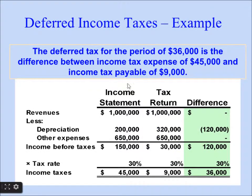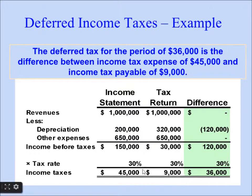The income statement shows income tax expense of $45,000, and the tax return shows tax payable of $9,000. Subtracting tax payable of $9,000 from income tax expense of $45,000 gives $36,000, which is the deferred income taxes for the period.